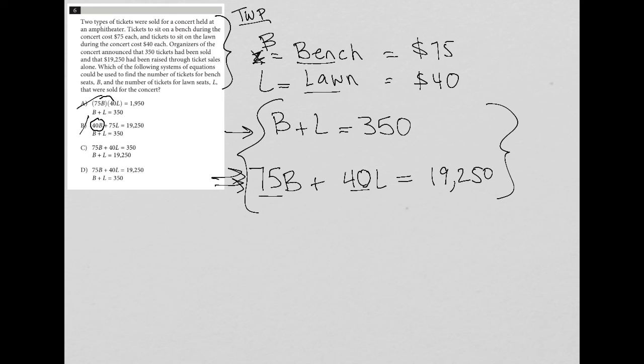For choice C, we have 75B. So that's good. 40L. That's good. But they have it equaling 350. That's not true. So C is out.